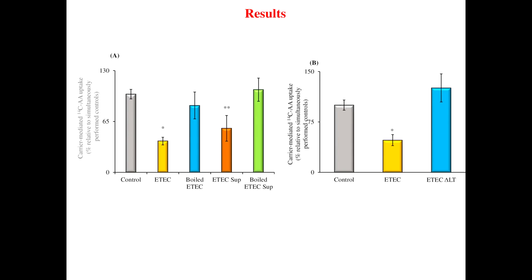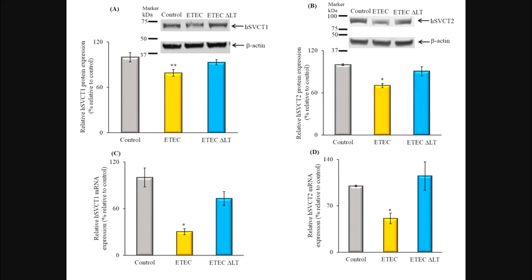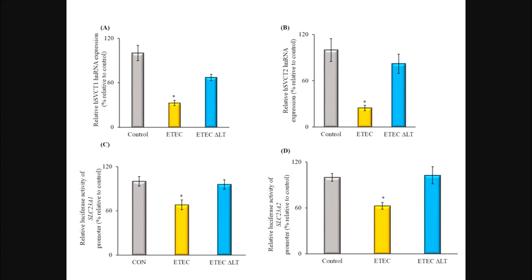This was confirmed using an LT mutant ETEC, which failed to inhibit ascorbic acid uptake. The ascorbic acid uptake inhibition was also associated with a marked reduction in human SVCT1 and SVCT2 protein, mRNA, and heteronuclear RNA.